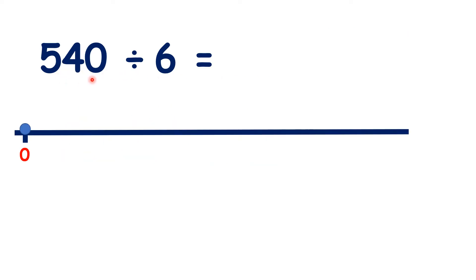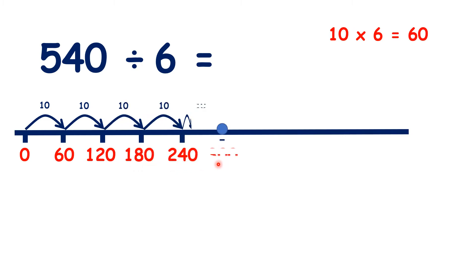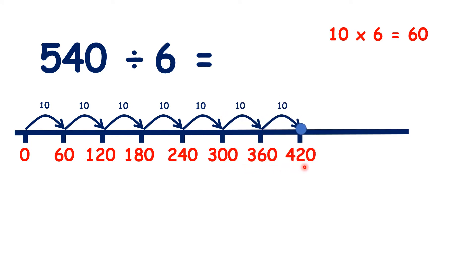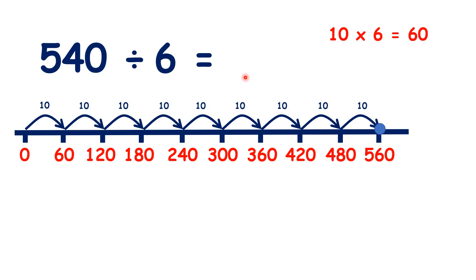So what is 540 divided by 6? Again, we can count up in steps of 10 times 6 each time: 60, 120, 180, 240, 300, 360, 420, 480, and 540. So because we counted 9 steps of 10 times 6, our answer must be 90.